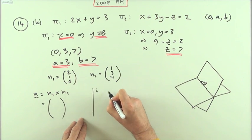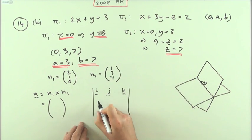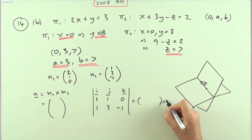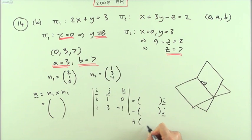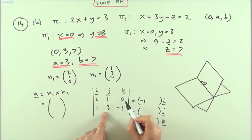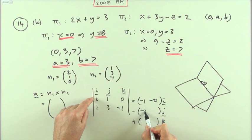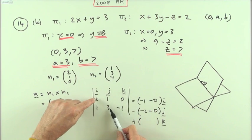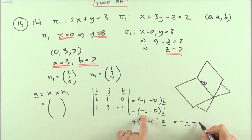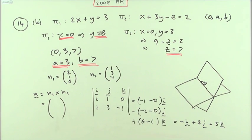The direction vector of the line will be n₁ × n₂. Setting out the determinant: i, j, k; (2, 1, 0) and (1, 3, −1). For i: (1)(−1) − (0)(3) = −1. For j: (2)(−1) − (0)(1) = −2, but with the minus sign gives +2. For k: (2)(3) − (1)(1) = 5. So the direction vector is (−1, 2, 5) — and that can't be simplified further.